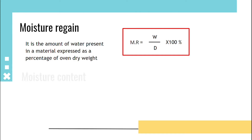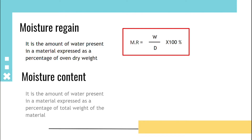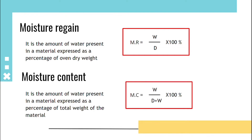Moisture content is the amount of water present in a material expressed as a percentage of total weight of the material. That is: Moisture Content = amount of water / (oven dry weight + weight of water) × 100.